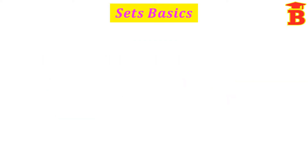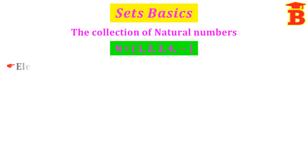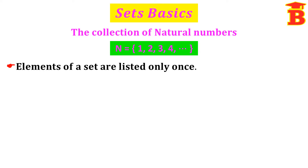Next let us see the basics of sets. Take the example of the collection of natural numbers. This can be written as capital N equal to set bracket with the natural numbers 1, 2, 3, 4, etcetera. Here the elements of a set are listed only once. We know natural numbers start from 1, so we write 1, 2, 3, 4, etcetera — we must not repeat the numbers.